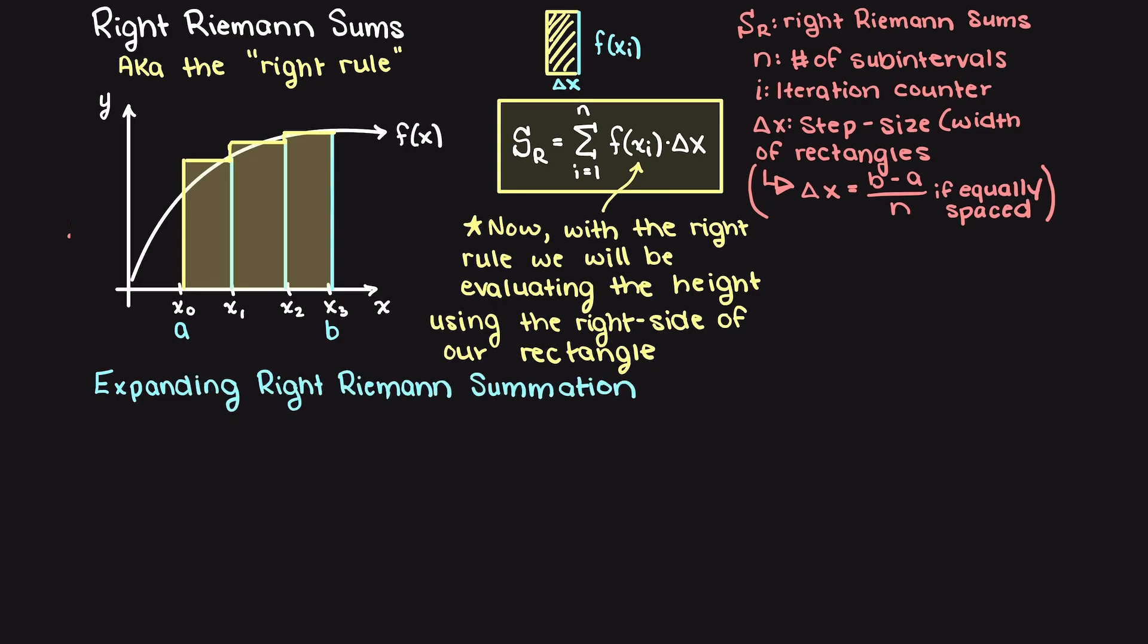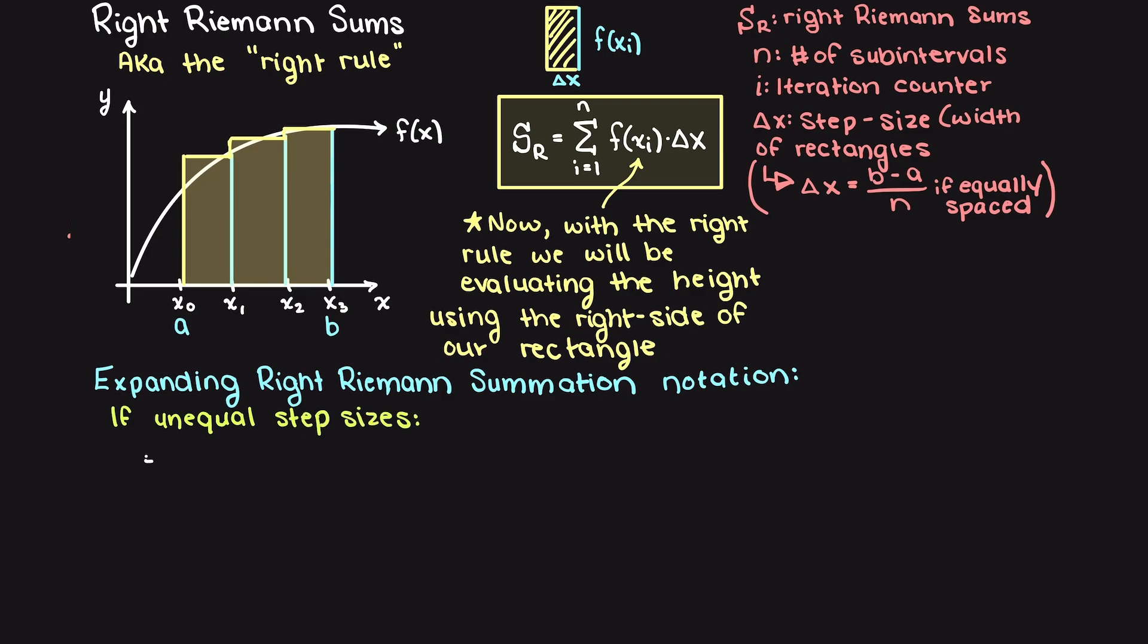Now let's write out the equation for right Riemann sums if we have unequal step sizes. To reiterate, this means our rectangles do not all share the same base, or the same delta x.